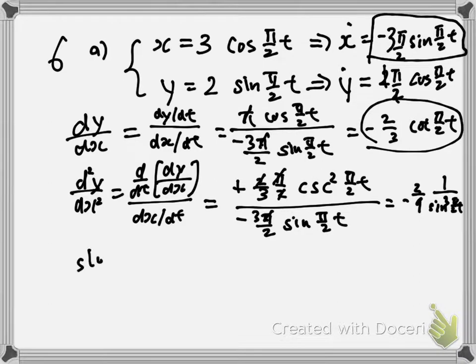So if you want to know the slope, all you have to do is—they want the slope at t equals 1. So substitute the t equals 1 value into dy/dx. Then that would be the slope.